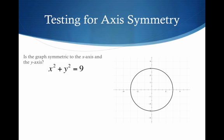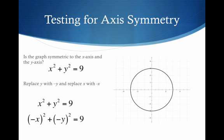What about this one? Is the graph symmetric to the x-axis and the y-axis? Let's step through this. Let's replace y with negative y and x with negative x. Under the square, both negatives go away, and we get back to our original graph — the circle.